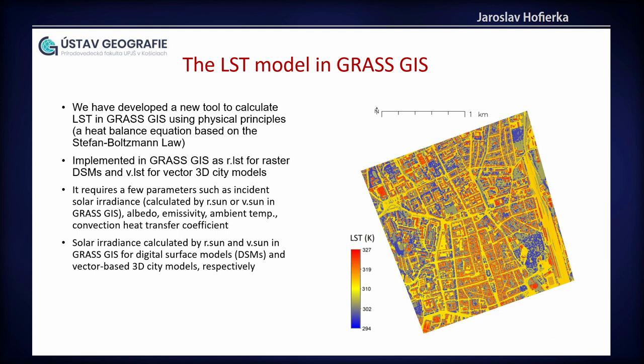This model is quite simple and uses several input parameters. One of them, the most important, is solar irradiance that is calculated also in GRASS GIS using r.sun. This module is part of the standard distribution of GRASS, and there is also V.sun, a full 3D solar radiation model that is not part of the standard distribution of GRASS.